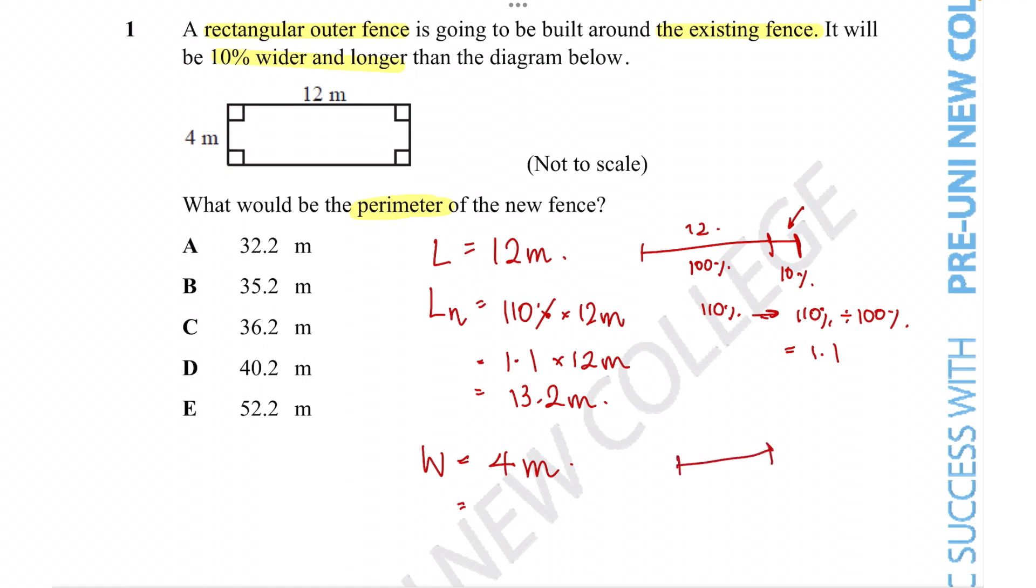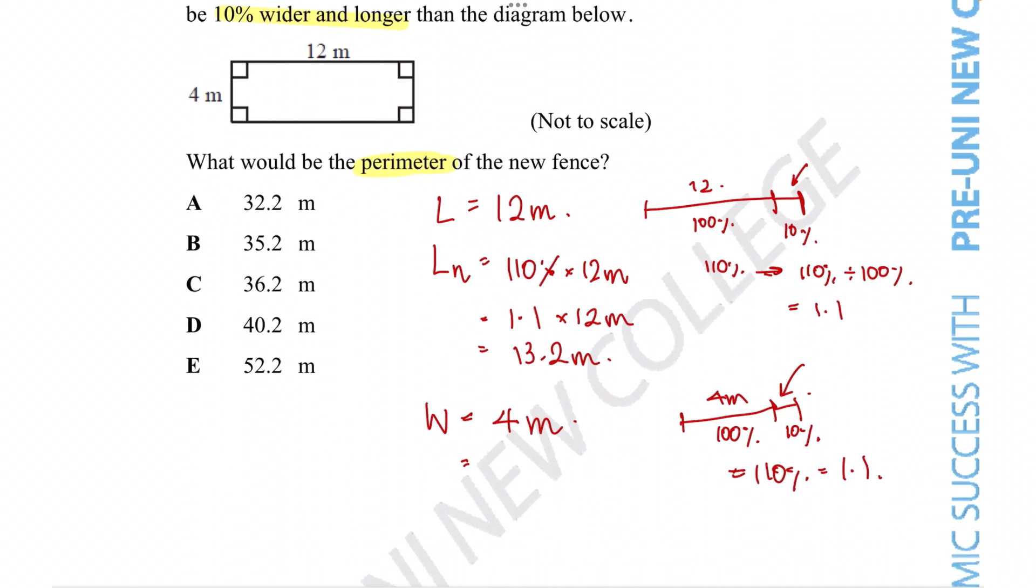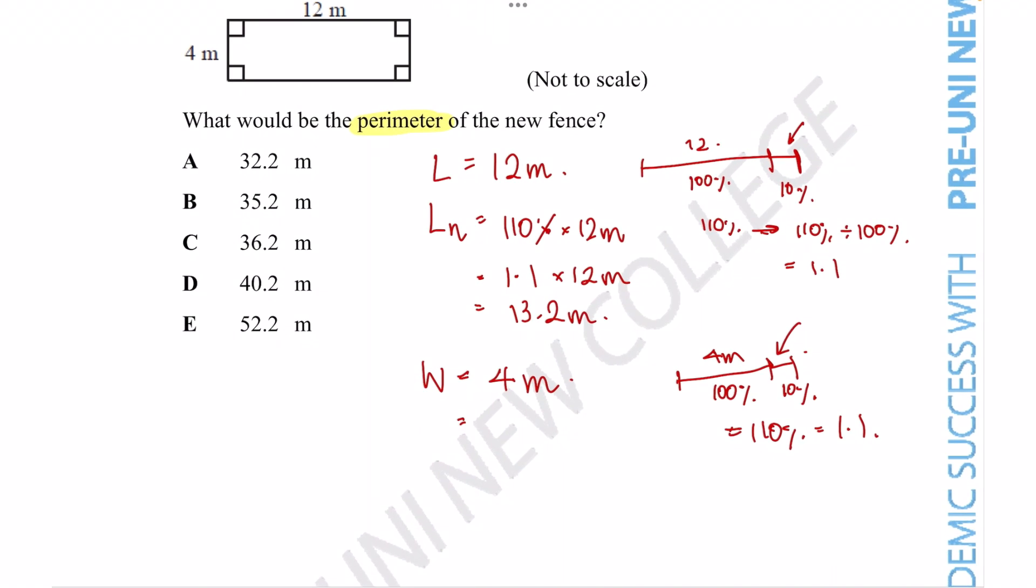So again we've got the original 4 meters—that's 100%—and 10% more is going to be tacked on. In total we've got 110% increase in width, which is 1.1 as a decimal. So 4 times 1.1 gives us the new width, which equals 4.4 meters.